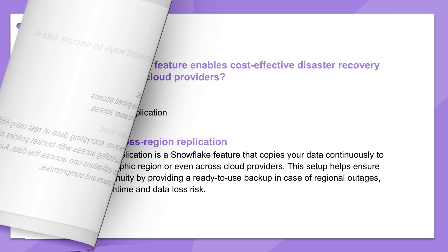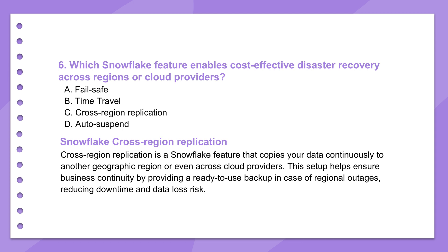Let's broaden out and look at another major player — Snowflake. Their cross-region replication feature gets talked about a lot for cost-effective disaster recovery. What's really compelling about it is how it handles keeping synchronized copies of your data across different geographic regions or even across different cloud providers — AWS to Azure, for instance. This obviously boosts resilience and helps with business continuity. Instead of having to build and manage some complex active-passive DR setup yourself, Snowflake handles the replication pretty seamlessly, leveraging the underlying cloud infrastructure efficiently. So you get robust disaster recovery without that traditionally massive operational and capital cost.